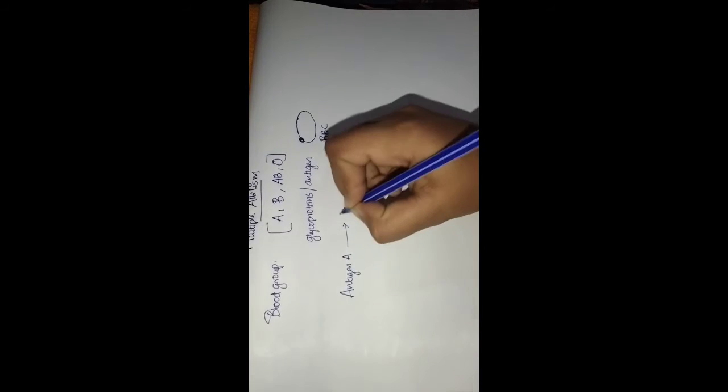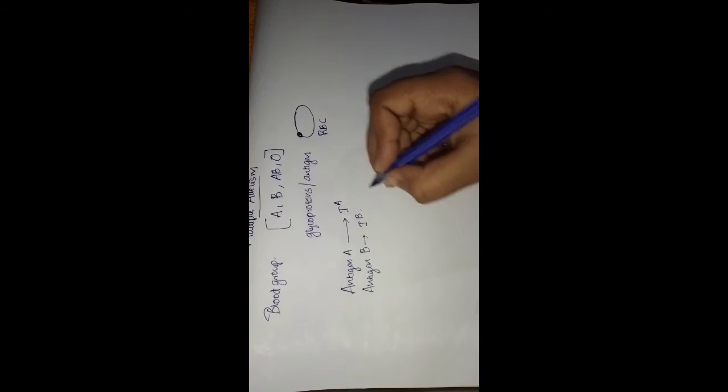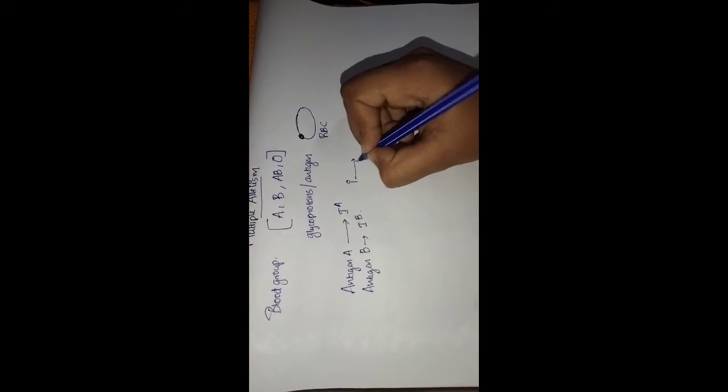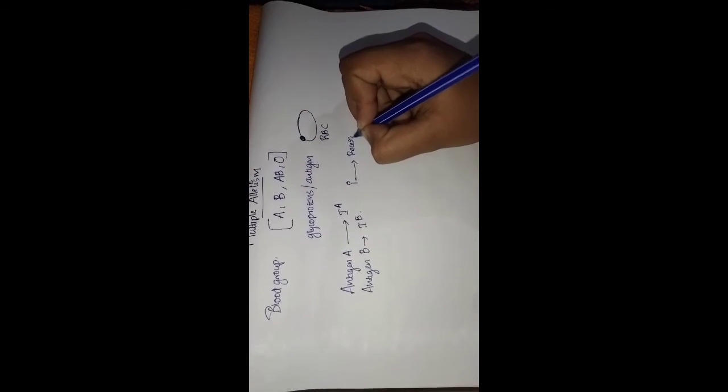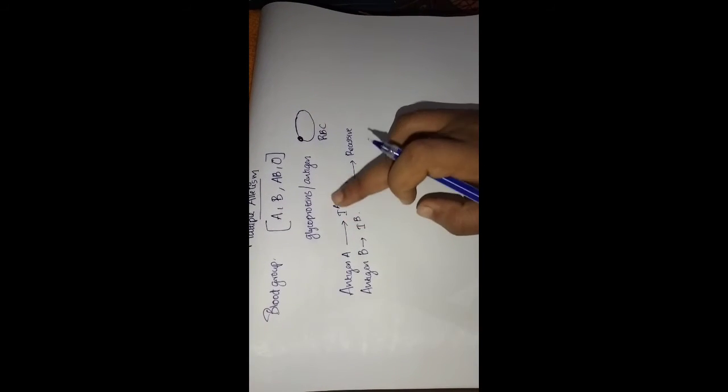Antigen A is produced by the dominant gene Ia, and antigen B is produced by the dominant gene Ib. The small i is recessive and cannot produce any antigen. Ia and Ib are both dominant over small i. Ia and Ib are co-dominant — meaning equally dominant — so we write Ia equal to Ib.